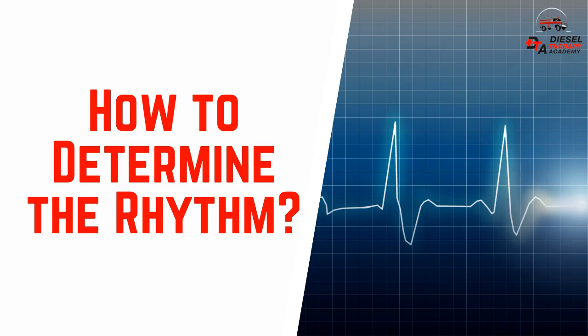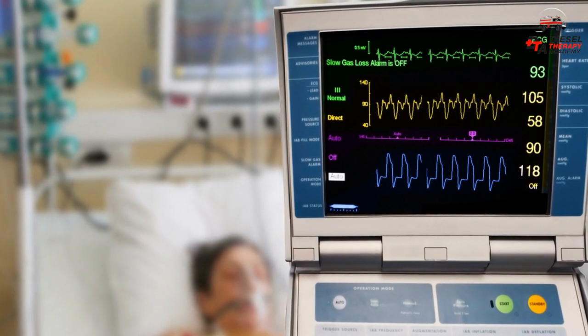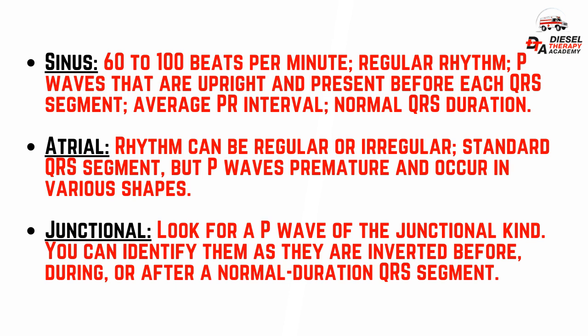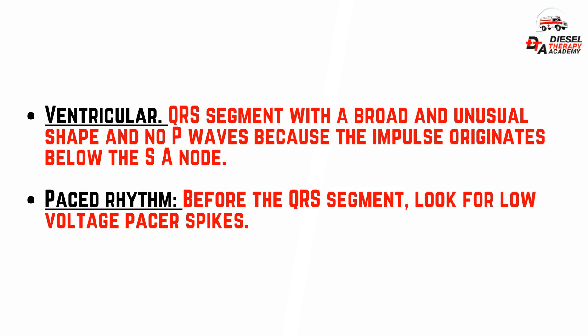How to determine the rhythm — consider these vital factors: Sinus: 60–100 beats per minute, regular rhythm, P-waves upright and present before each QRS segment, average PR interval, normal QRS duration. Atrial: rhythm can be regular or irregular, standard QRS segment, but P-waves are premature and occur in various shapes. Junctional: look for inverted P-waves, which may appear before, during, or after a normal-duration QRS segment. Ventricular: broad, unusually shaped QRS segments with no P-waves, as the impulse originates below the SA node. Paced rhythm: look for low-voltage pacer spikes before the QRS segment.